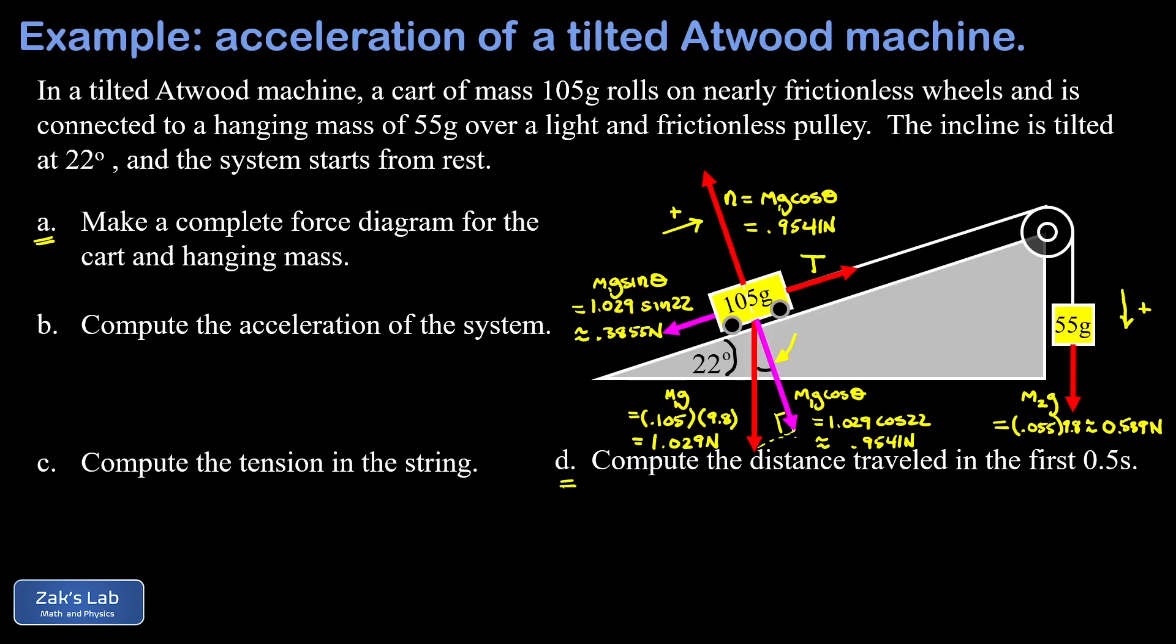There's a second force pulling on this mass, and that's the tension in the string. Provided our pulley is light and frictionless, that's going to be the same unknown value T. So there's our complete force diagram and we're ready to start writing down some equations.